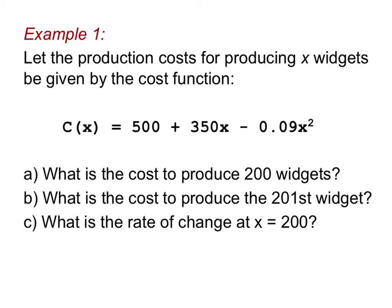Let's get right into an example. Let the production costs for producing x widgets be given by the cost function: C(x) = 500 + 350x - 0.09x². Before we talk about what we're going to calculate, we work at a company that makes widgets—tape recorders, watches, iPads, whatever you want to be making. x is the number of those widgets that we're kicking out of our factory. Prior to us getting into this analysis, somebody has figured out that this math expression will tell us the cost at a particular production level.